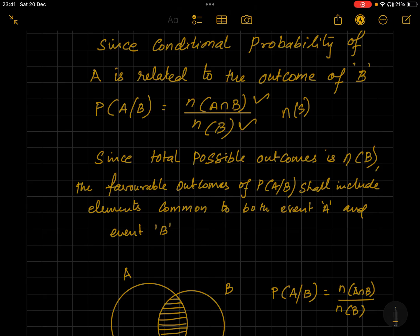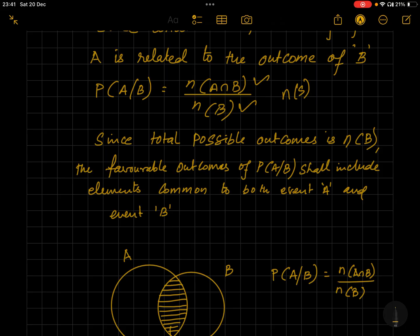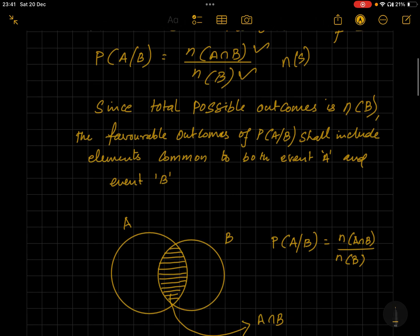Next comes the favorable outcomes. Why is it that we use only A∩B? We know that the sample space in this case is n(B). Therefore, the conditional probability of A cannot be outside B, but it cannot be fully B also because it is different from B. Therefore, the favorable outcome should include elements common to both event A and B.